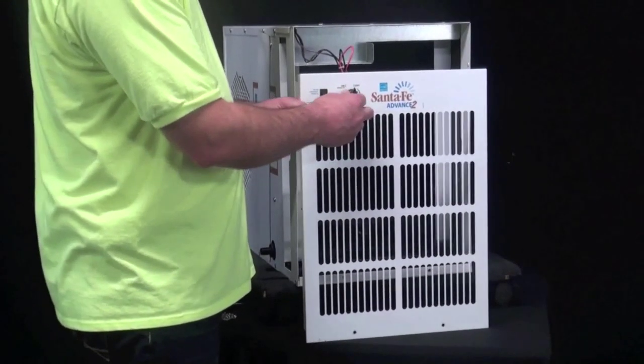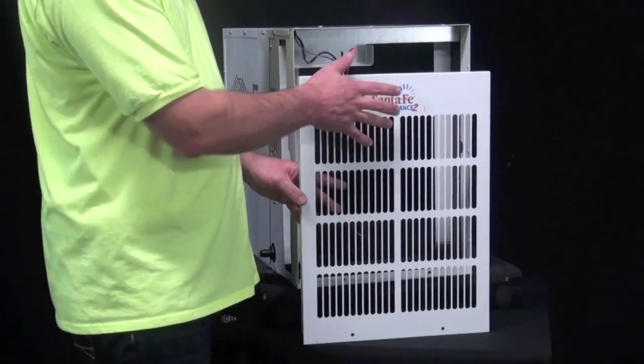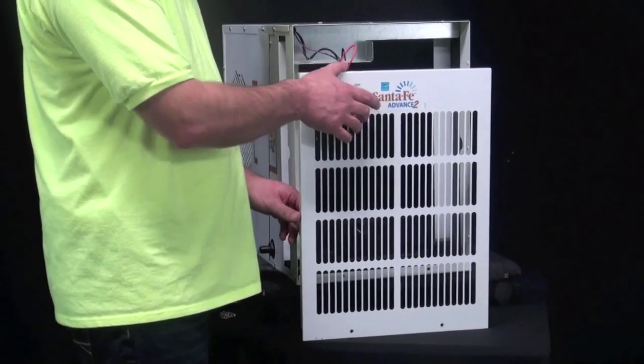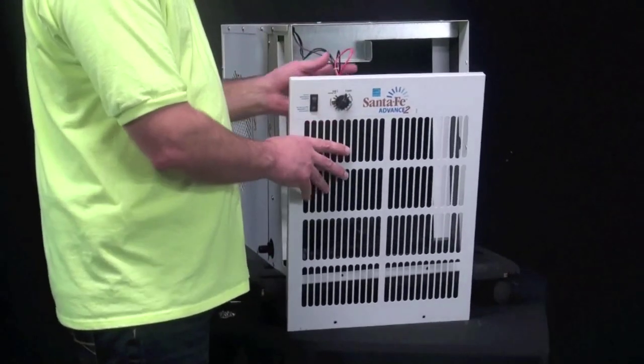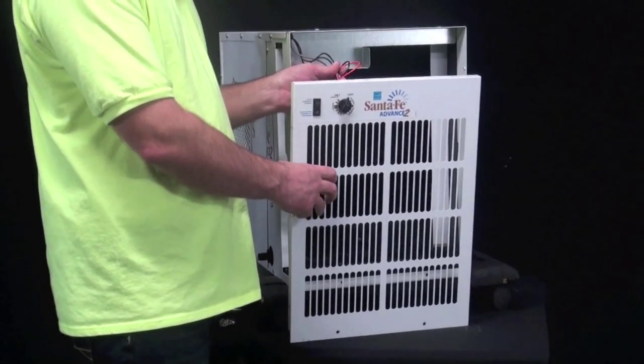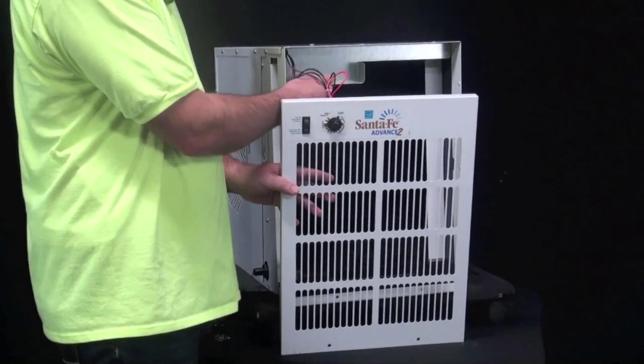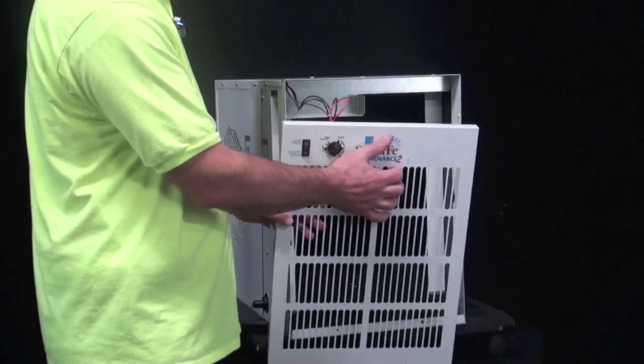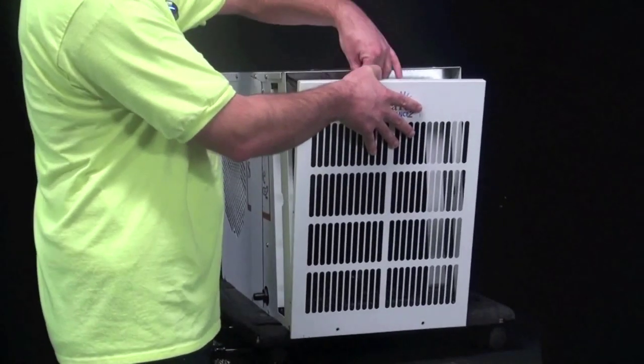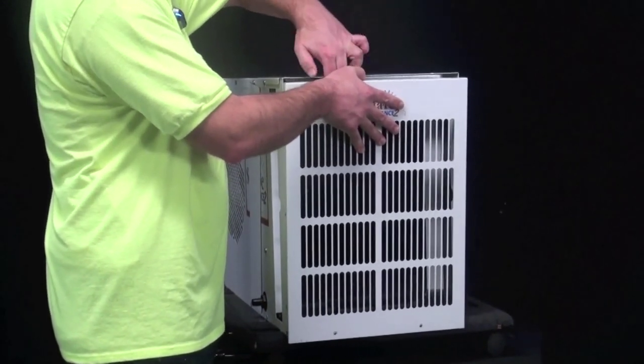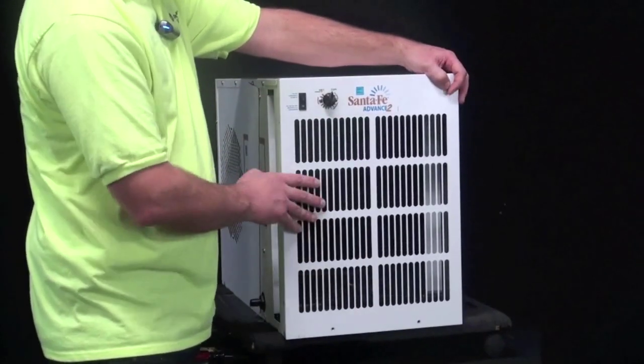Now the next step after you have the dehumidistat mounted to the front grille is to reinstall the grille. Now when you do that, you'll notice these wires that are coming from the dehumidistat and the fan switch, you'll want to tuck them inside this metal box so they don't get pinched. So you can lift the grille up and as you're doing that, feed the wires into that metal box and then position the grille back on the cabinet.